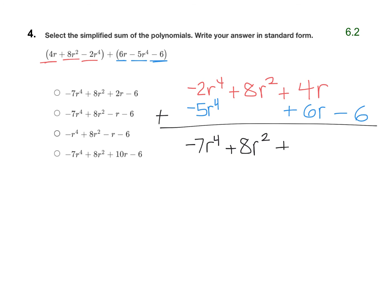4 plus 6 is 10, so we have a positive 10r, and then a negative 6 on the end, which makes our answer negative 7r to the fourth plus 8r squared plus 10r minus 6. And again, you can just click that answer right here.